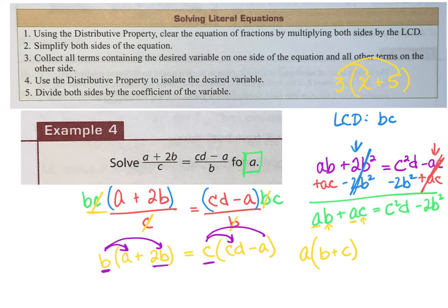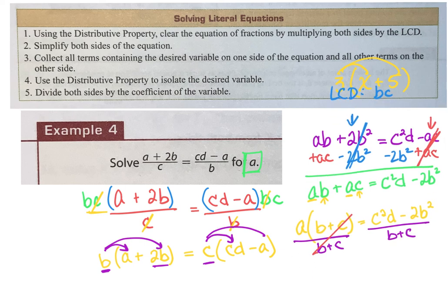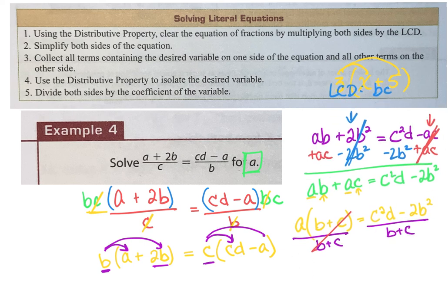The right-hand side — leave it completely alone because it doesn't have any A's in it. What's happening between the A and the group (B plus C)? It's multiplication. So since it's multiplication, I can divide by the entire group (B plus C). On the left-hand side it cancels, so I now have my A all by itself. On the right-hand side I have what A equals.